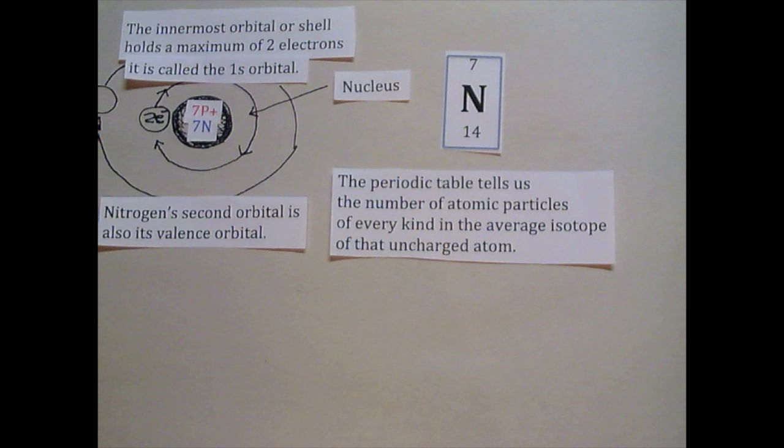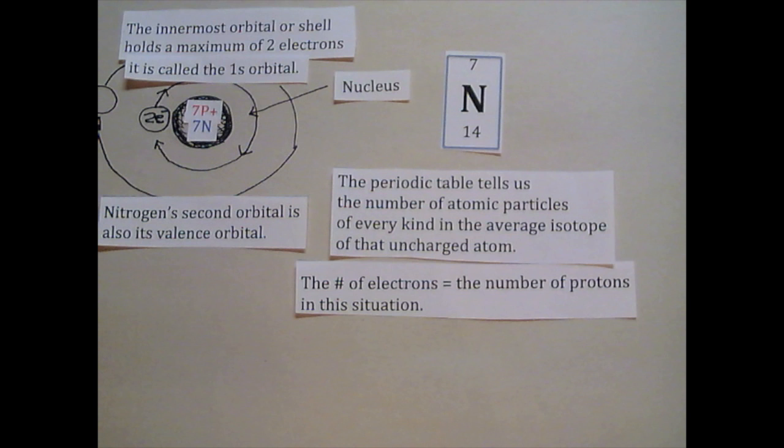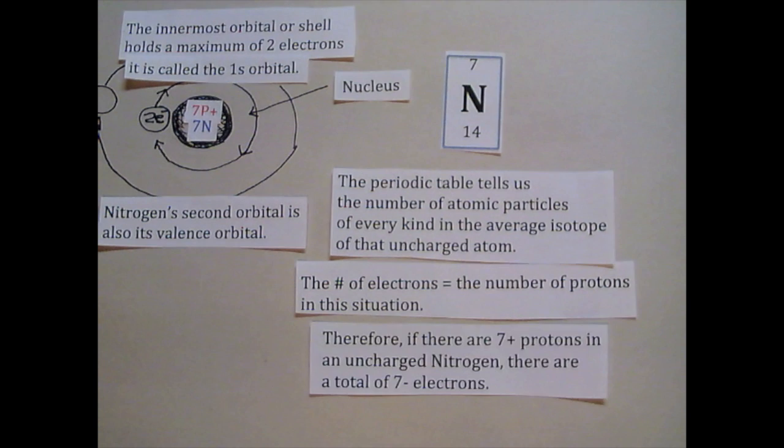The periodic table tells us the total number of atomic particles in an uncharged atom. The number of electrons with a negative charge is the same as the number of positively charged protons in an uncharged atom. Therefore, since uncharged nitrogen has 7 protons, it will have 7 total electrons.